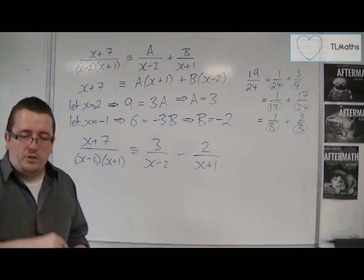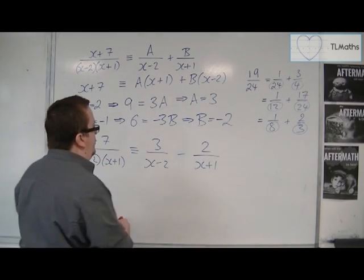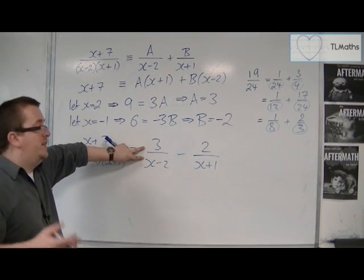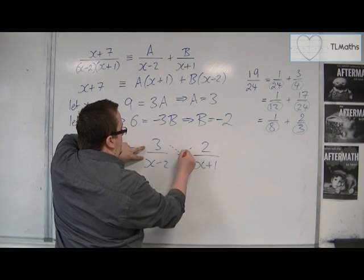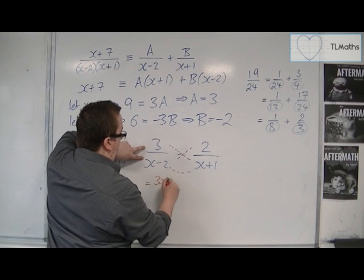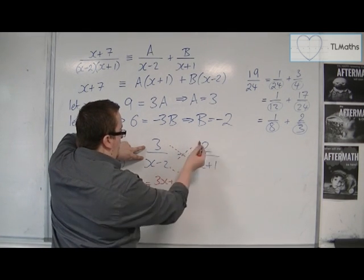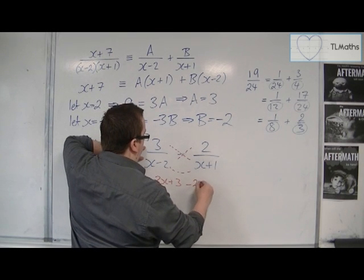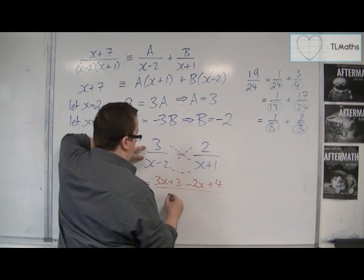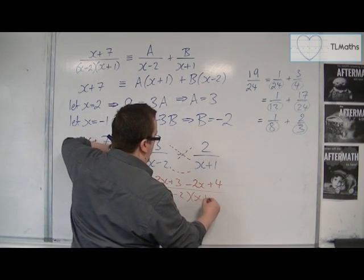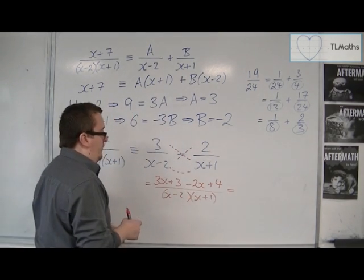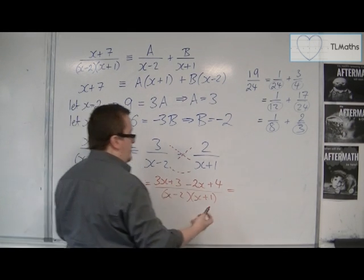If I do the same and I knock out that bracket, then x could be minus 1. Then I've got minus 1 plus 7, which is 6. And then I've got, well, that bracket's 0. Minus 1 take away 2 is minus 3, so minus 3B. And that means that B would have to be minus 2. And I now have that x plus 7 over x minus 2, x plus 1, is precisely the same as 3 over x minus 2 minus 2 over x plus 1.